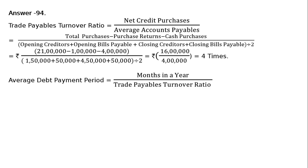Then, Average Debt Payment Period — also called Average Payment Period — is equal to months in a year upon Trade Payables Turnover Ratio. That is 12 months divided by 4 times, which equals 3 months. We can also find this in days: 360 days divided by 4 times equals 90 days.